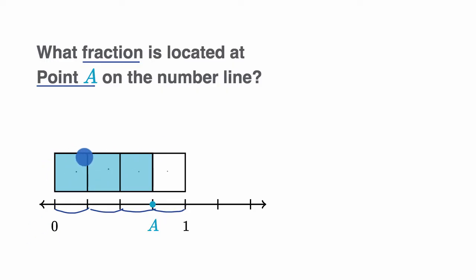So each of these equal sections, you would consider a fourth. So that's a fourth right over there. That's another fourth right over there. This is another fourth right over there. So how many of these fourths have been shaded in?